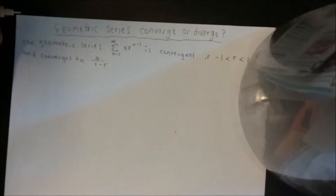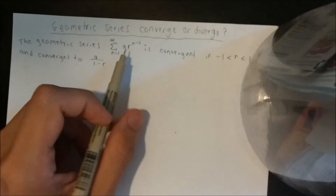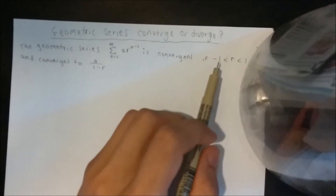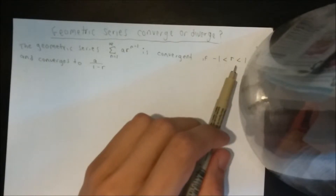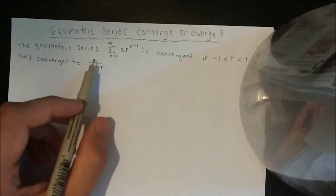In this video we're going to see if a geometric series will converge or diverge. Remember that in a geometric series, if the common ratio is between negative 1 and 1, then it's going to converge to this formula.